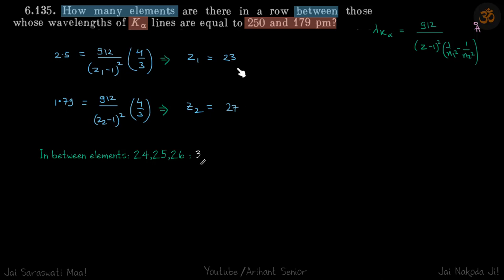So between these two elements, there will be three elements whose atomic number will be 24, 25 and 26. All right.